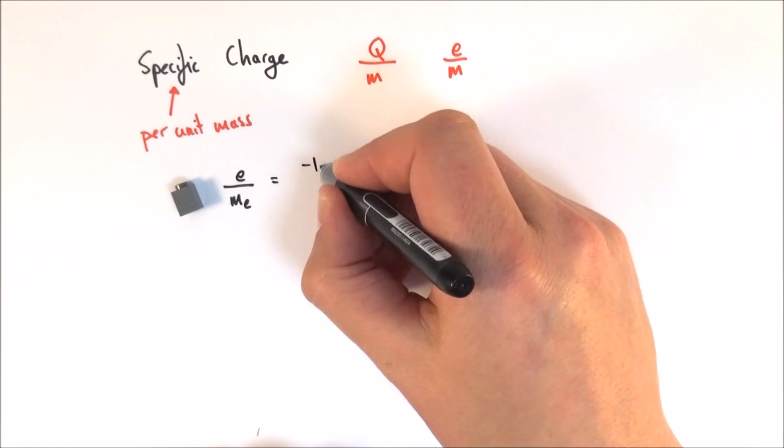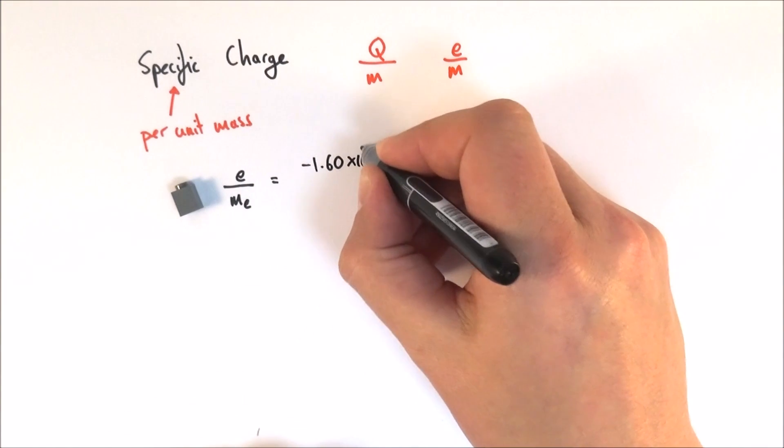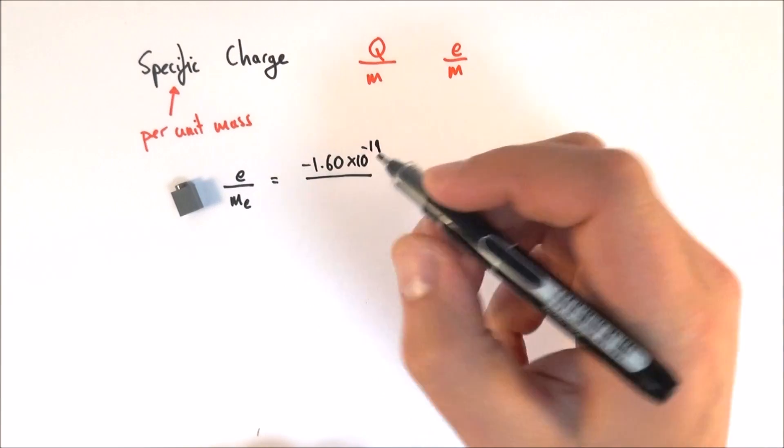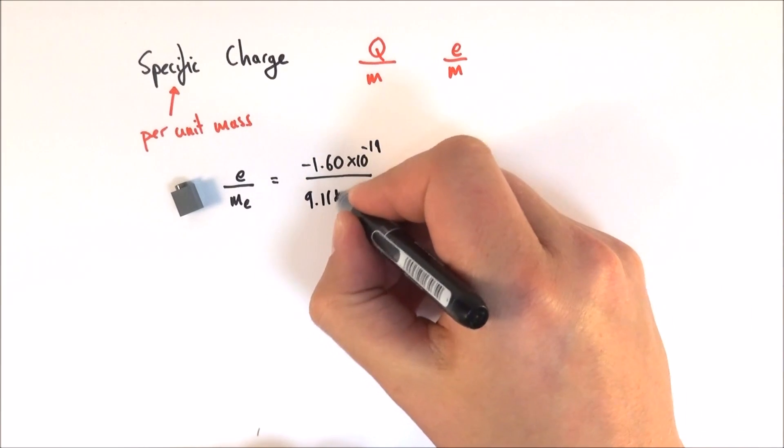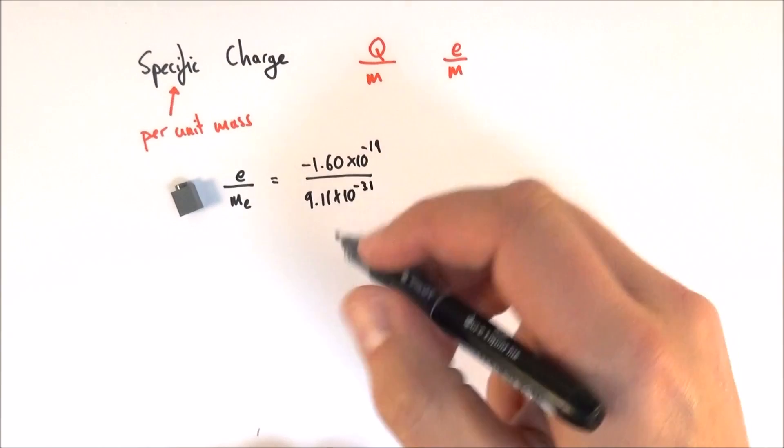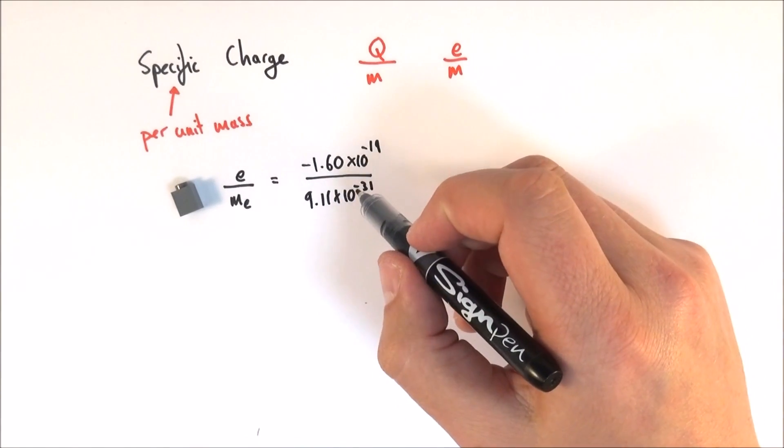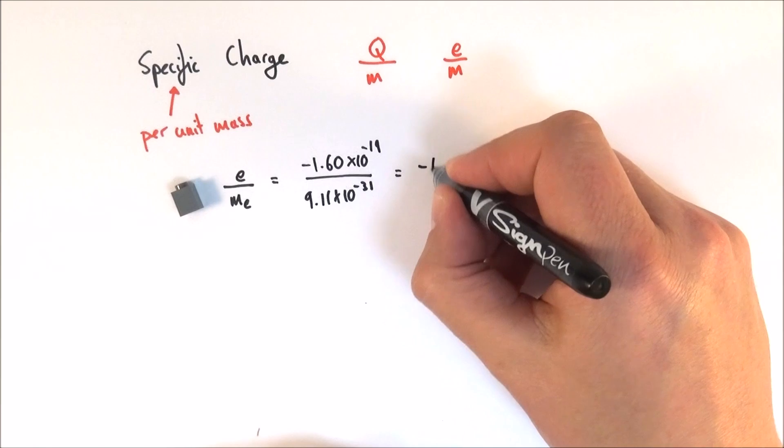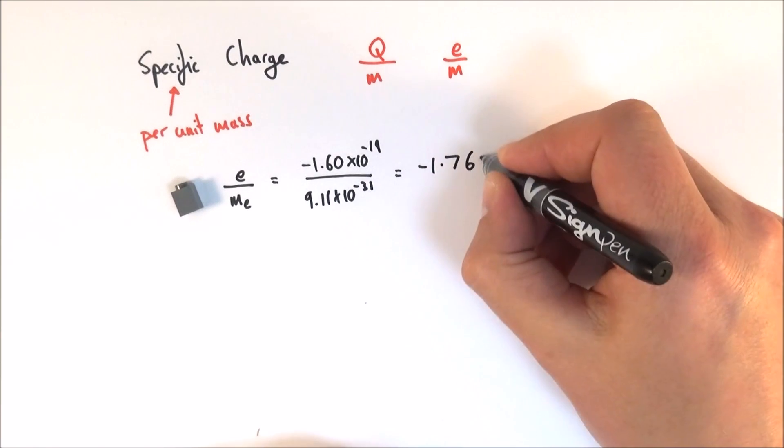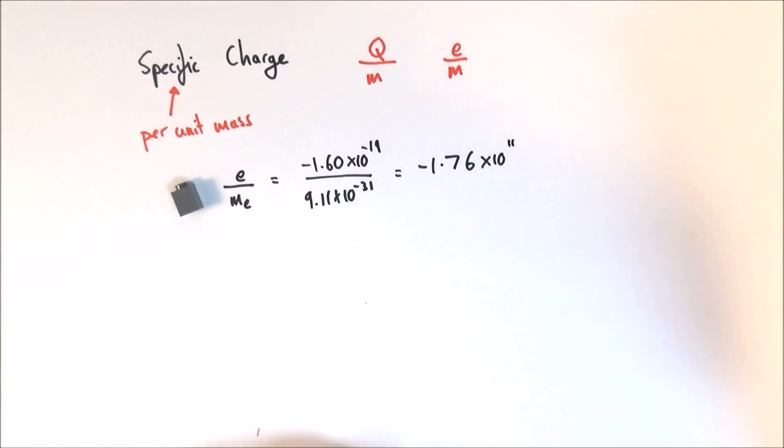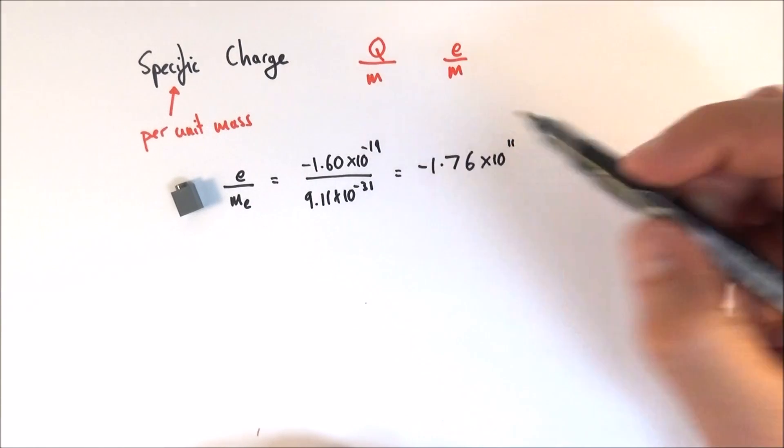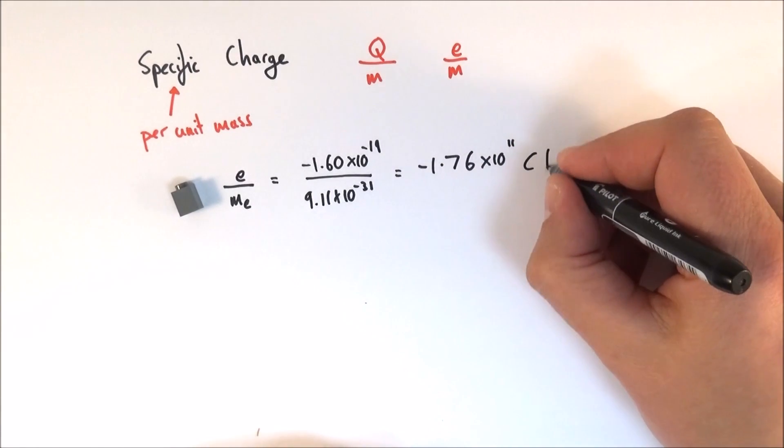So in this case, the charge is equal to minus 1.60 times 10 to the minus 19 coulombs. The mass is 9.11 times 10 to the minus 31 kilograms. And if you do the working out, you find that it's got a value of minus 1.76 times 10 to the 11, and the units because it's charge to mass are going to be coulombs per kilogram.